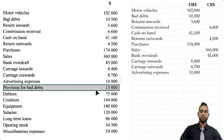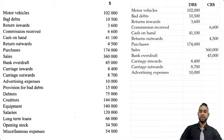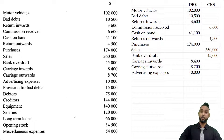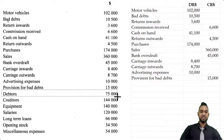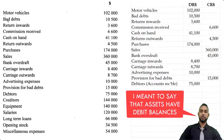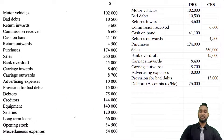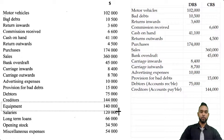The provision for bad debts is a contra asset; its function is to reduce the debtors or accounts receivable balance in the balance sheet. Debtors is an asset with a debit balance, so a reduction to that debit item comes in the form of a credit — the provision for bad debts has a credit balance. Next, debtors is an asset with a debit balance. Creditors or accounts payable is a liability — we owe people money — so liabilities have credit balances. Equipment is an asset and has a debit balance.